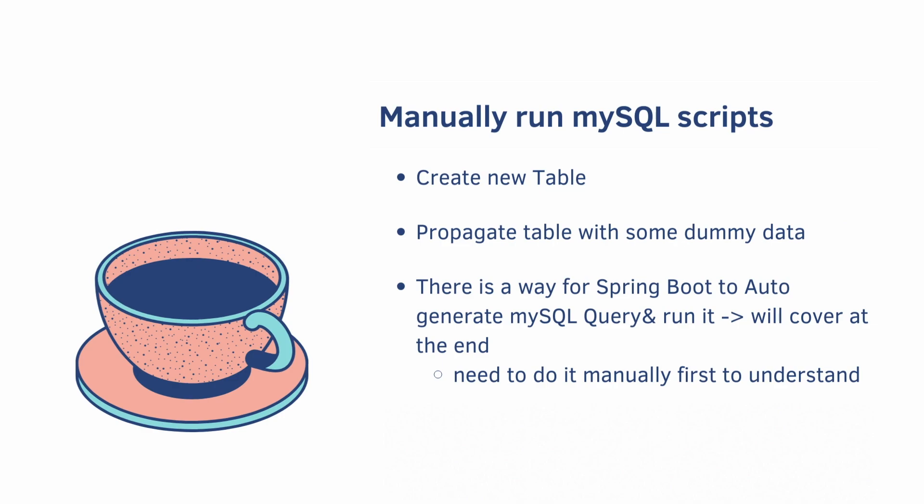Right now we're going to manually run our MySQL scripts to create a new table and propagate it with some dummy data. There is a way for Spring Boot to automatically generate the MySQL query and run it — we'll cover that later. We need to do it manually first to understand what it's actually doing.